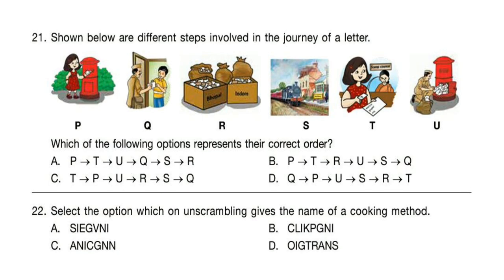Question 21: Shown below are different steps involved in the journey of a letter. Look at the pictures. Which of the following options represents their correct order? Correct answer is option C — the order is T, P, U, R, S, and last is Q.